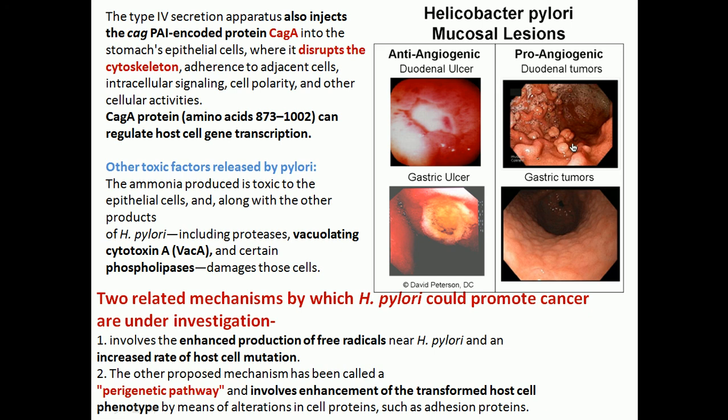Other toxic factors produced by Helicobacter pylori include, besides ammonia, the vacuolating cytotoxin VacA, and phospholipases which damage cell membranes. There are two mechanisms by which Helicobacter pylori can promote cancer. The first involves enhanced production of free radicals near Helicobacter pylori; as free radicals are produced, the rate of cell mutation increases, potentially transforming cells into cancerous cells.